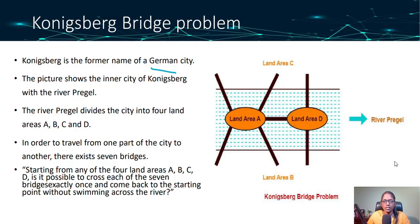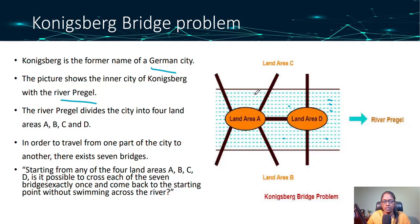The next one is the Königsberg bridge problem. Königsberg is the former name of a German city. This picture shows the inner city of Königsberg with the river Pregolya. This river Pregolya divides the city of Königsberg into four lands.